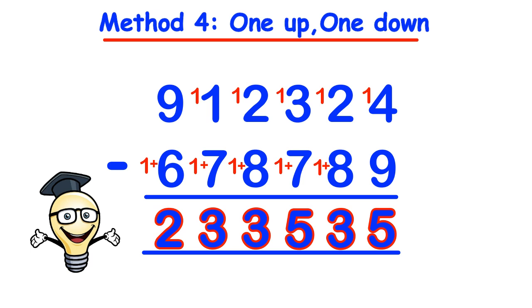Point to note, the 1 up 1 down method can be used on any number of digits from 2 upwards just as long as we remember to fill in any blank spaces with zeros.